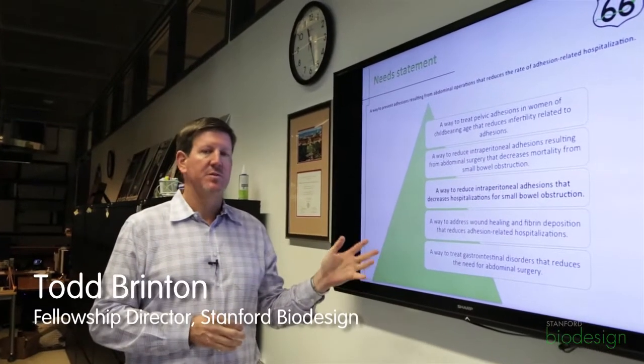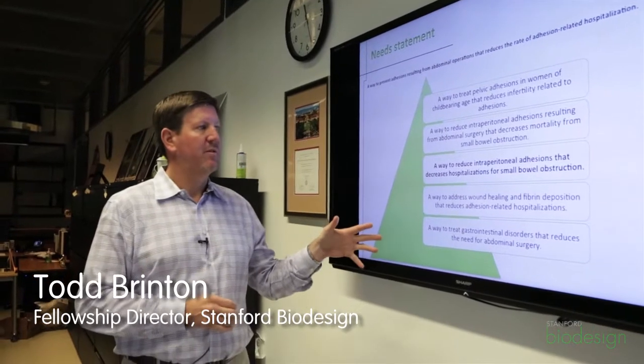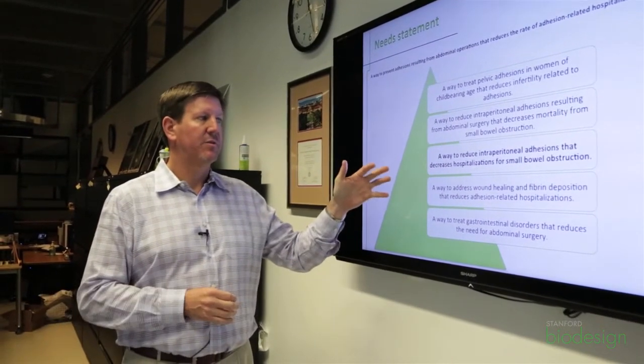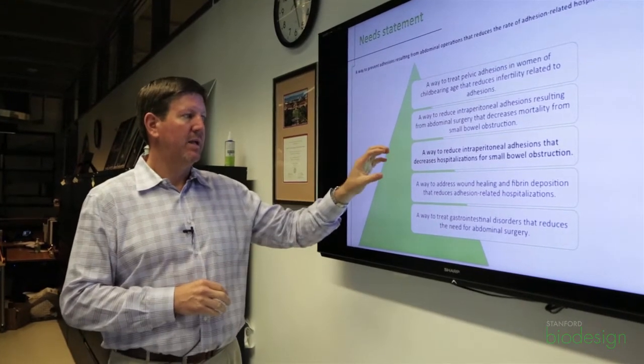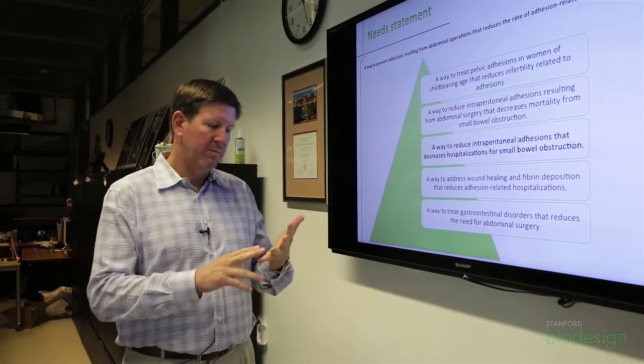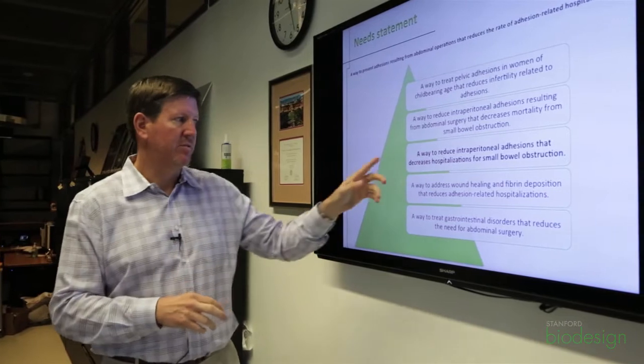One of the things we use is a technique called scoping. Scoping is a method by which we actually test first an early prototype of a need statement. We do that by laying out the combination of problem, population, and outcome in a single sentence.